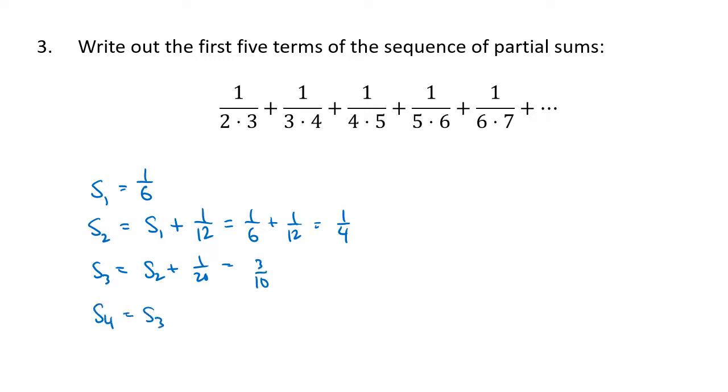s₄ will be s₃ plus the next term, which is 1/30, 5 times 6 is 30. That's going to work out to be 1/3 when you simplify that all down. And finally s₅ is going to be s₄ plus the next term, that's 1 divided by 6 times 7, that's 42. And so when we add 1/3 plus 1/42, we end up with 5/14 when you simplify that and reduce it down. So these are our first five partial sums.